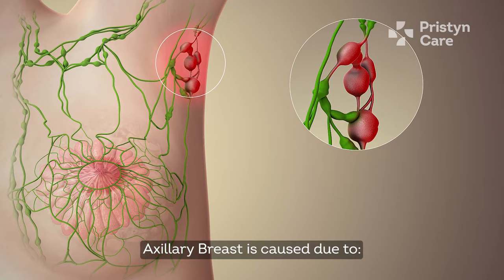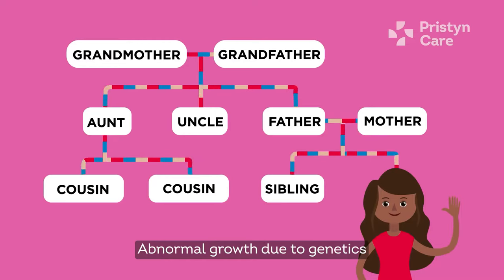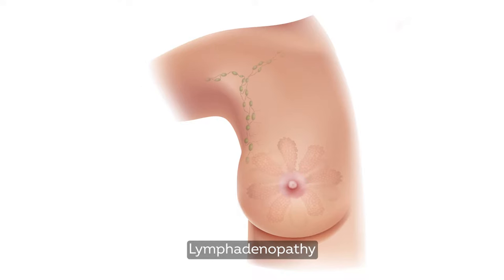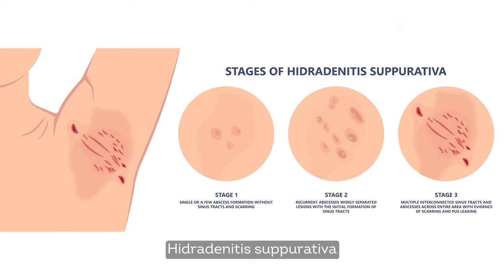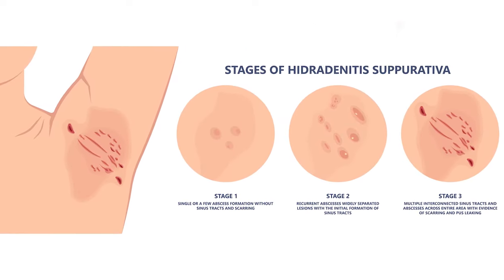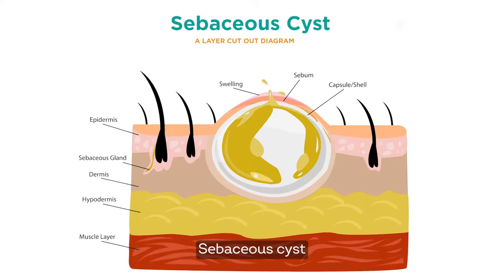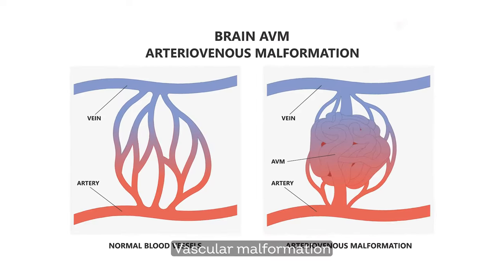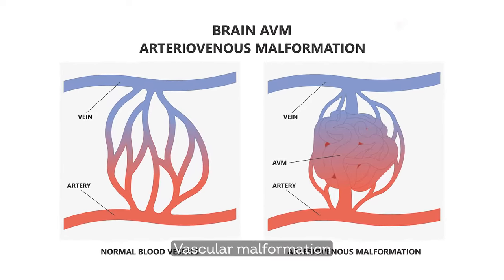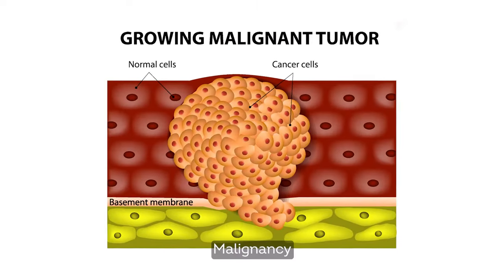Auxiliary breast is caused due to abnormal growth due to genetics, lymphadenopathy, hidradenitis suppurativa, lipoma, sebaceous cyst, vascular malformation, or malignancy.